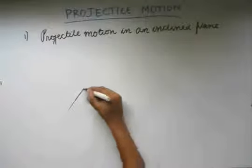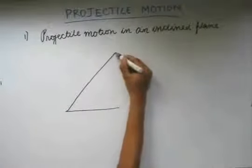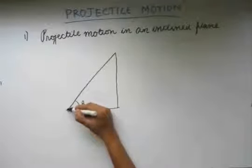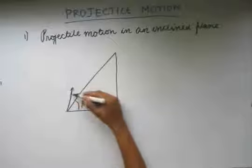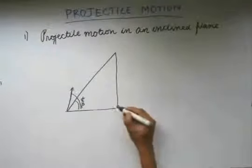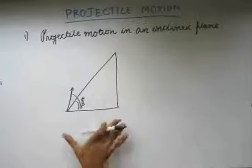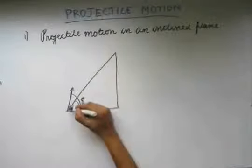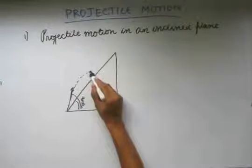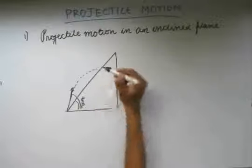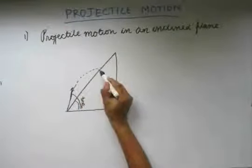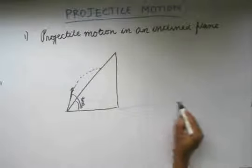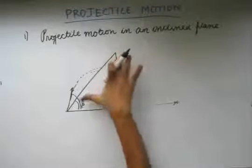Suppose we have an inclined plane which is inclined at an angle beta, and we throw a projectile at an angle alpha with the horizontal. In this case, we assume the inclined plane to be sufficiently long such that the particle hits the inclined plane — and this is just the range of the particle. If the inclined plane were very small, the particle would follow the parabolic path and drop somewhere else. So we assume the inclined plane to be sufficiently long.